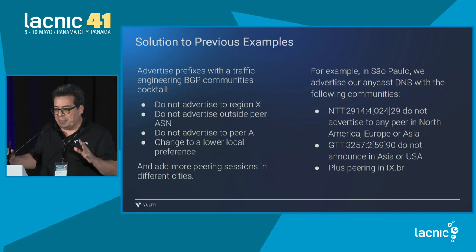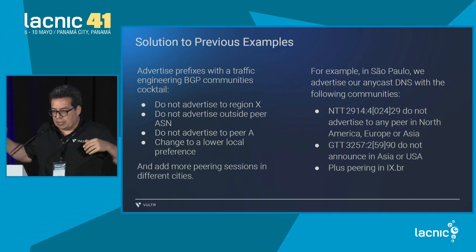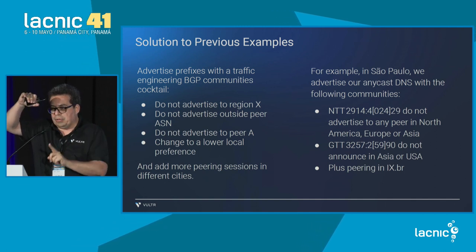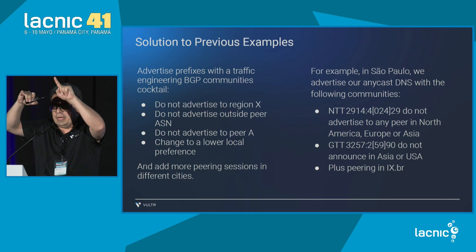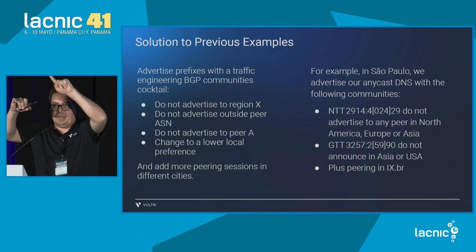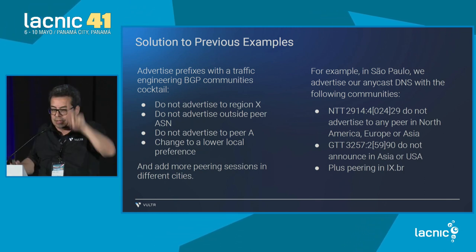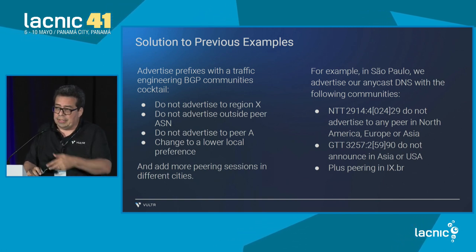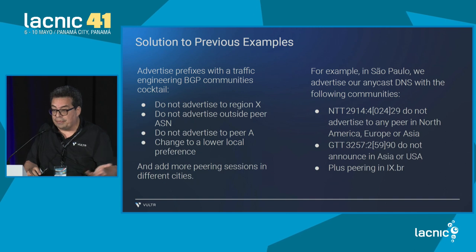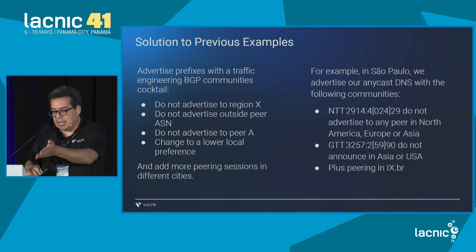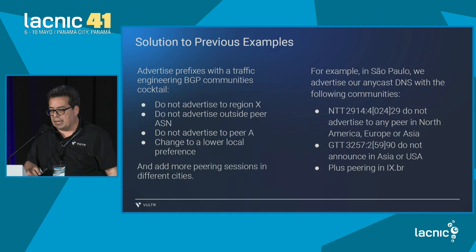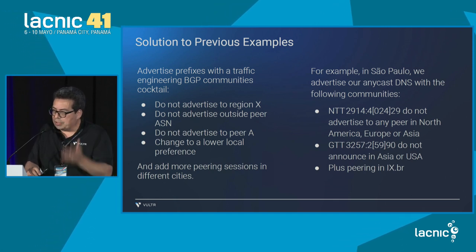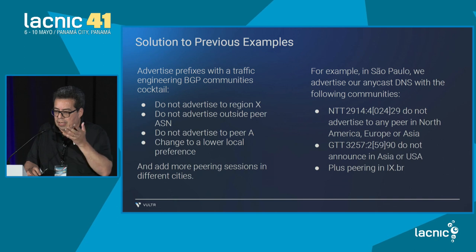The big problem we face is that Latin American companies very often get connected with the transit provider in Miami. So the traffic goes São Paulo → Miami → São Paulo → Santiago → Miami → São Paulo, and so on with all the capitals in Latin America. This can be solved if we have local traffic providers and send these international transit providers the appropriate communities. And of course, this is also solved through peering.